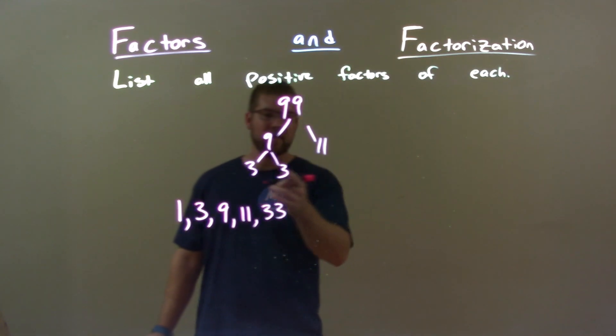After that there's nothing else that we can multiply with these numbers. So we're at the final number itself, 99.